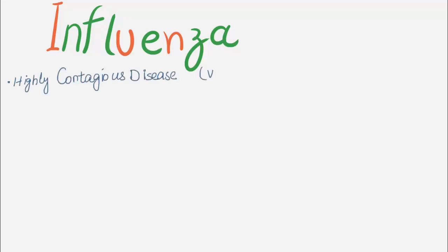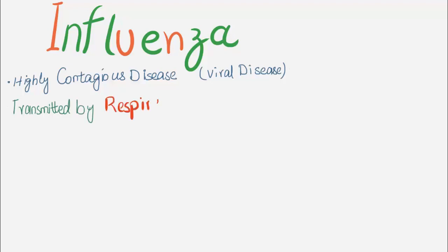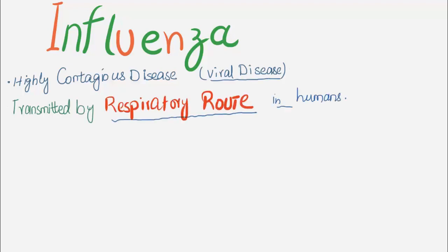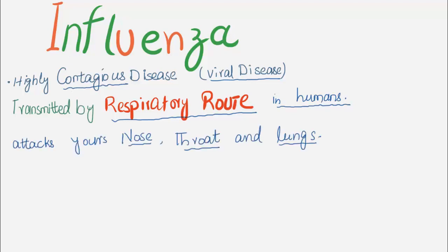Influenza, or Seasonal Flu, is a highly contagious viral disease transmitted by respiratory route in humans that attacks your nose, throat, and lungs.